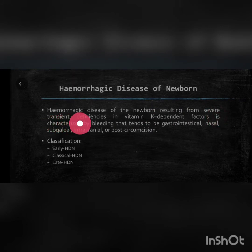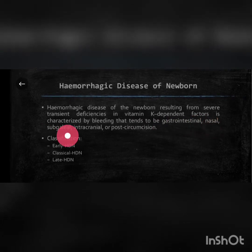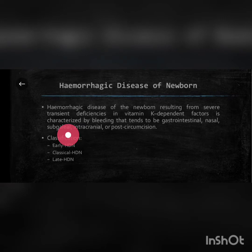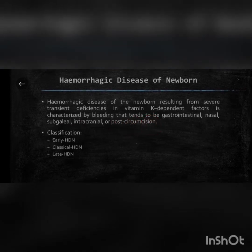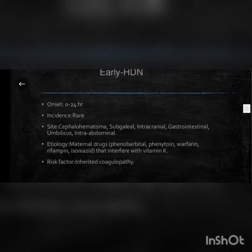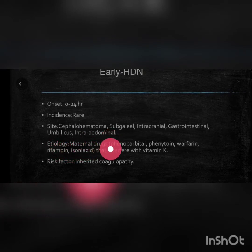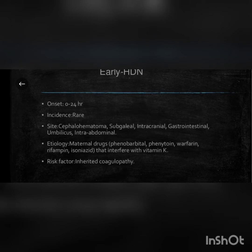Hemorrhagic disease of the newborn results from severe transient deficiencies in vitamin K-dependent factors and is characterized by bleeding that tends to be gastrointestinal, nasal, subgaleal (the space between the periosteum and the galea aponeurotic), intracranial, or post-circumcision. Classification includes: Early HDN — onset is 0 to 24 hours, incidence is rare, sites include cephalohematoma, subgaleal, intracranial, gastrointestinal, and umbilicus.